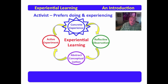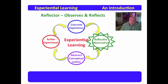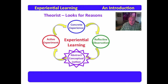Each of these areas that Kolb has identified really identifies a type of learner. Activists prefer doing and experiencing, where reflectors enjoy observing and reflecting — those learners who get such a kick out of watching something happen, reflecting on it, analyzing it over and over. Beyond the reflector, we have the theorist, who wants to look for reasons and draw meaning out of the experience and reflection that has taken place.